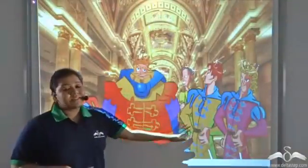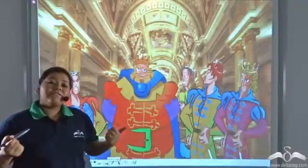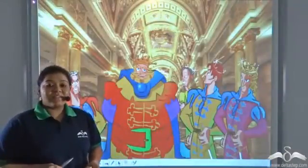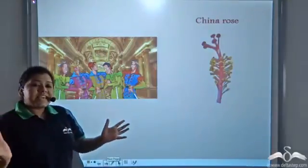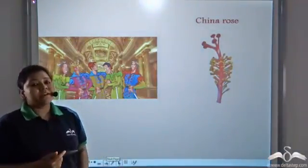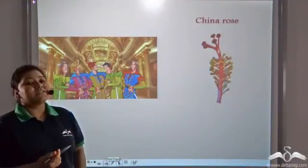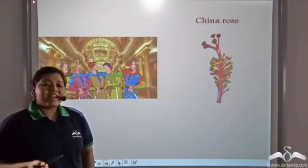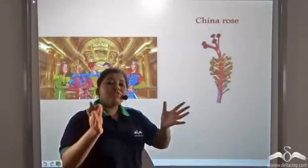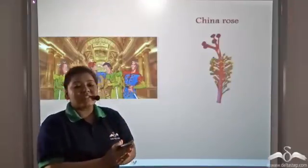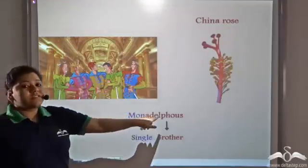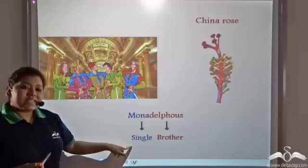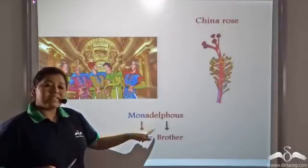Now suppose the king has many sons. These sons have different kinds of bonding between them. In one case, all the princes stay together as a single unit of brotherhood with a lot of harmony. Similarly, there are flowers in which the stamens come together to form a single unit, and such an arrangement is known as monadelphous, where 'mon' means single and 'adelphous' means brother.